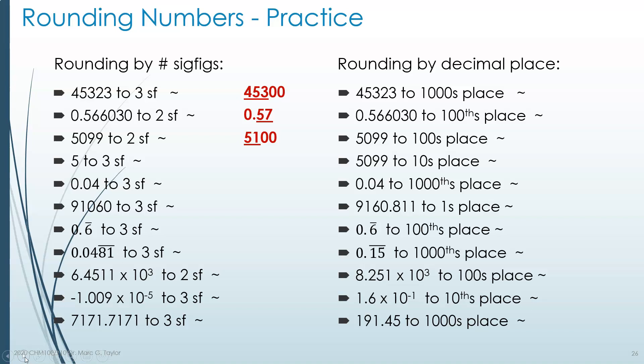The next problem is unusual — I won't give it on an exam, but you do occasionally see it on laboratory assignments: 5 to 3 sig figs. Well, 5 only has one sig fig. How do you add more sig figs to a number that only has one? You add zeros without changing the general value, by writing 5.00. This number has three sig figs, but still has the same value as 5.